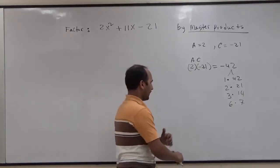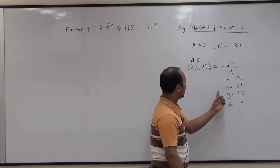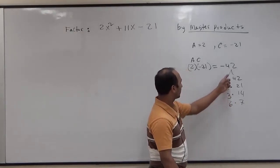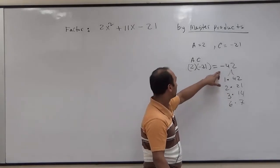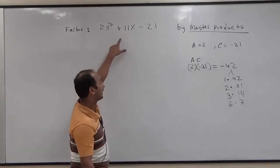Now using those factors, when we multiply the factors we're supposed to get negative 42. When we add, we want to get the middle term, which is 11.